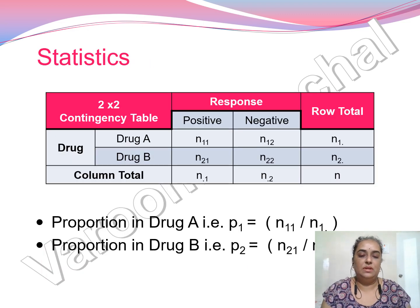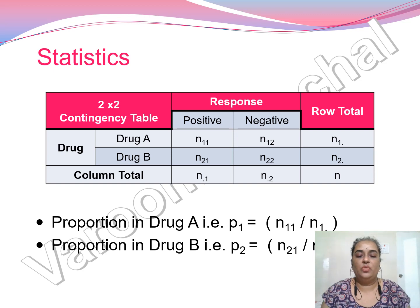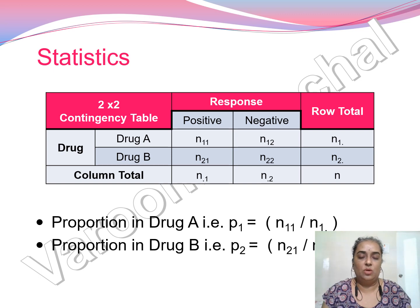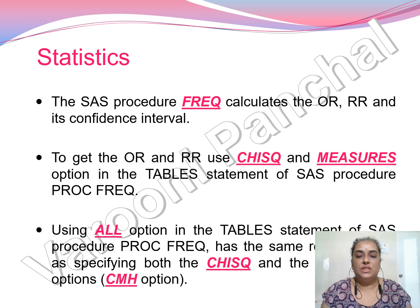Here is an example carried forward from the difference in proportions slide. We have a two-by-two contingency table with treatment drug A and drug B, and response positive or negative. The proportion p1 is calculated as n11 divided by n1-dot — the proportion of drug A having a positive response. The proportion p2 is n21 divided by n2-dot, the proportion of positive response in drug B.